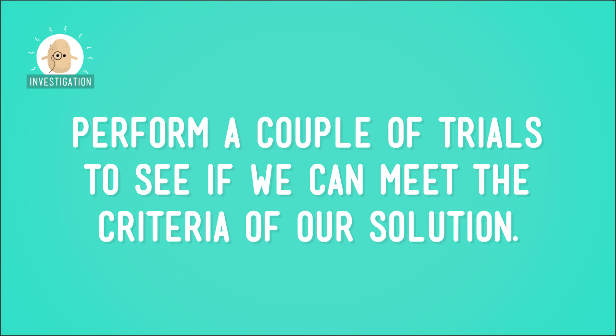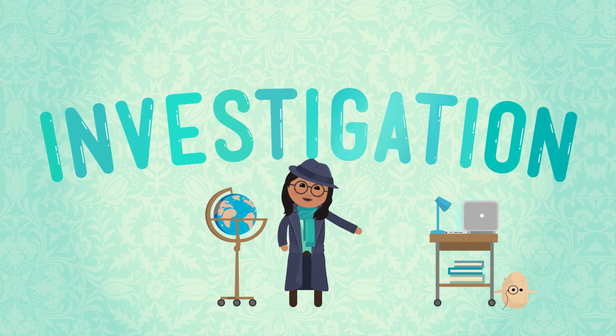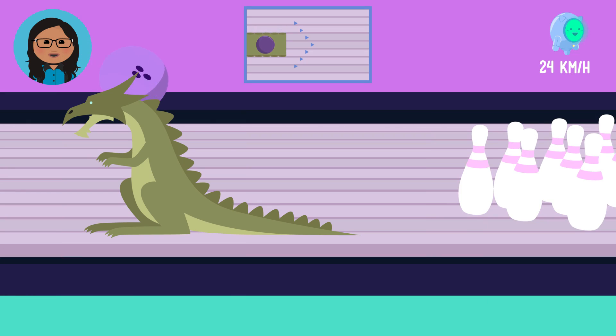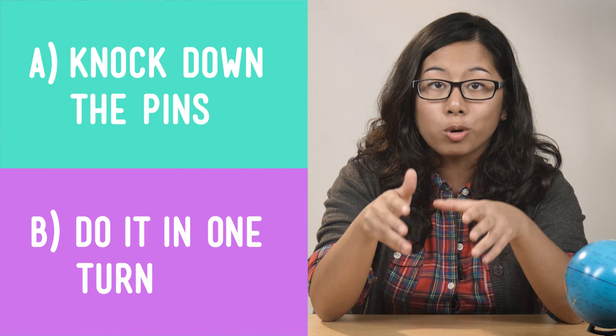Now we're ready to perform a couple of trials to see if we can meet the criteria of our solution — all of which is a fancy way to say, let's bowl. For our first trial, we'll aim the ball ramp so that the ball will roll directly down the middle of the lane. When we let the ball go, we see that we knocked some pins over, but not all. We might be able to get them with a second try, but that would mean that our solution didn't meet both criteria.